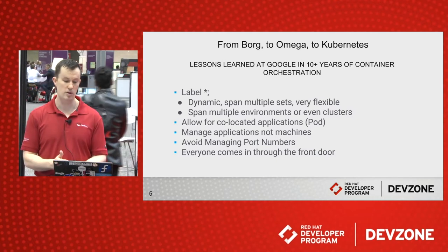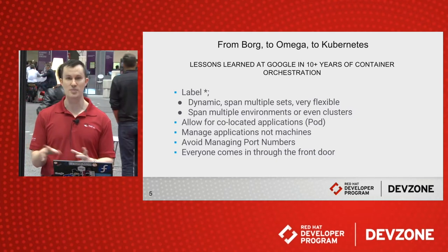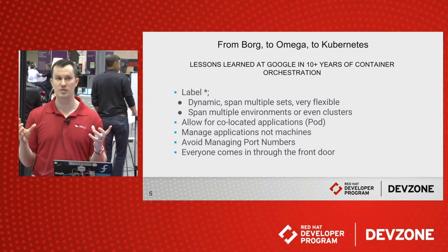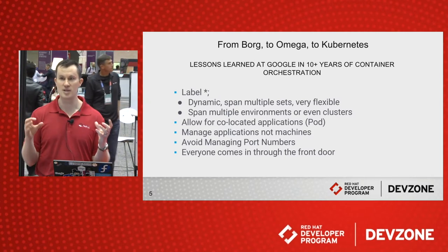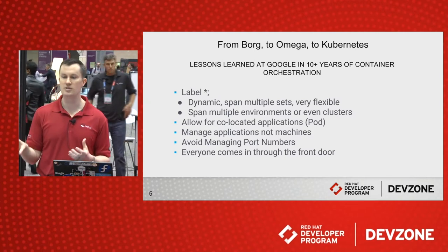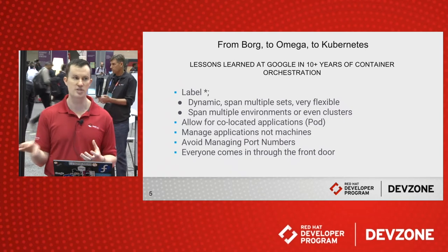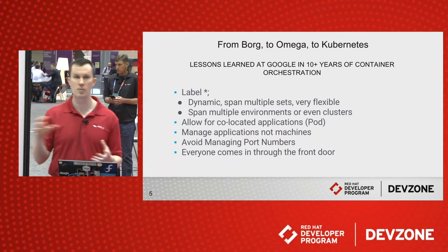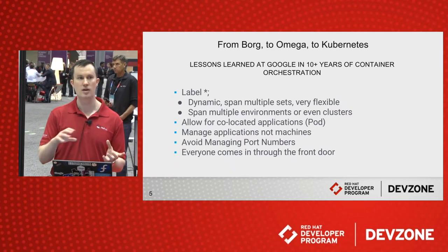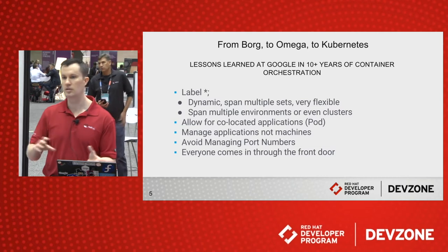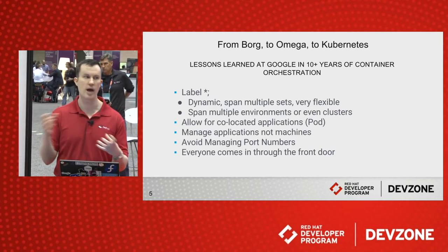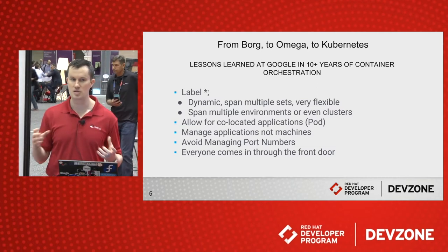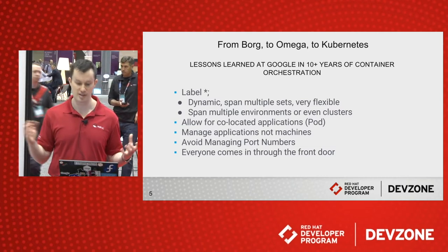Finally, this one is very important too: everybody comes in through the front door in Kubernetes. Nobody is accessing etcd directly — everyone's coming in through the Kubernetes API, or if you're using OpenShift, it's the OpenShift API accessing etcd. Nobody is able to access the data store directly because ultimately that's just going to lead to bad things.